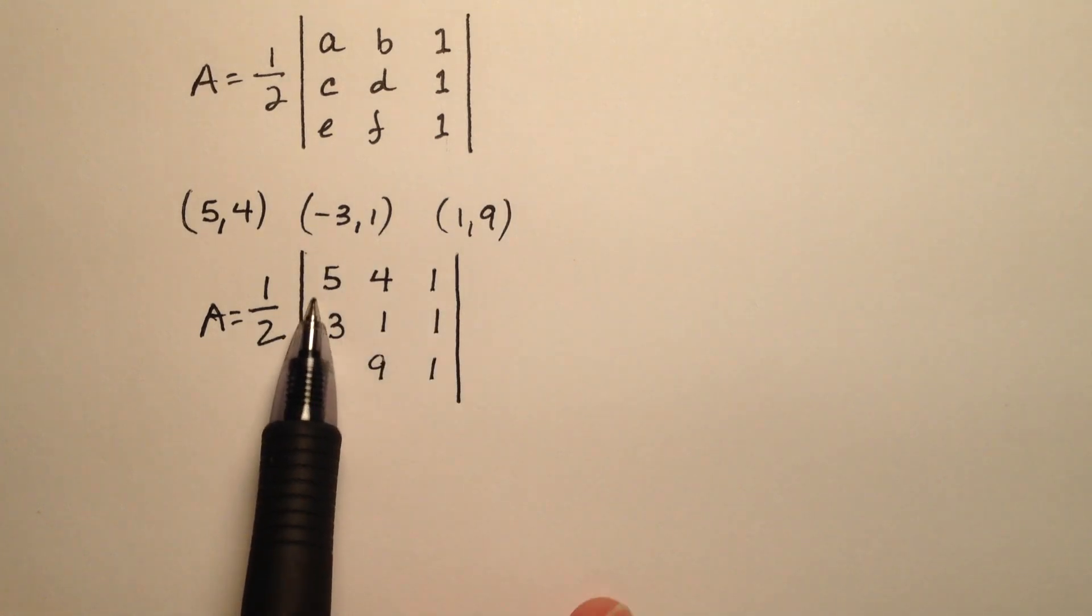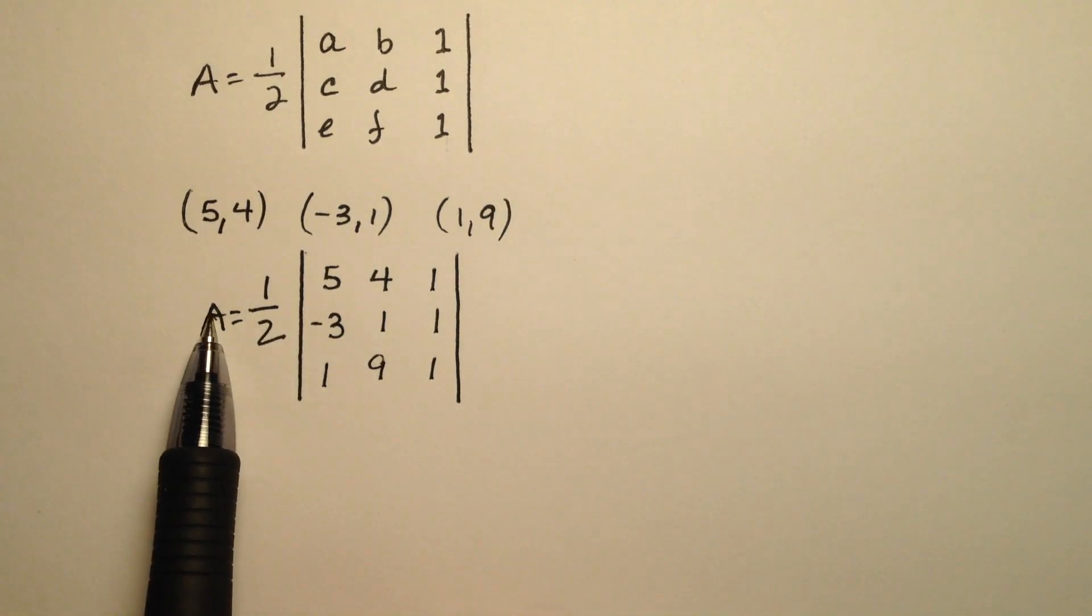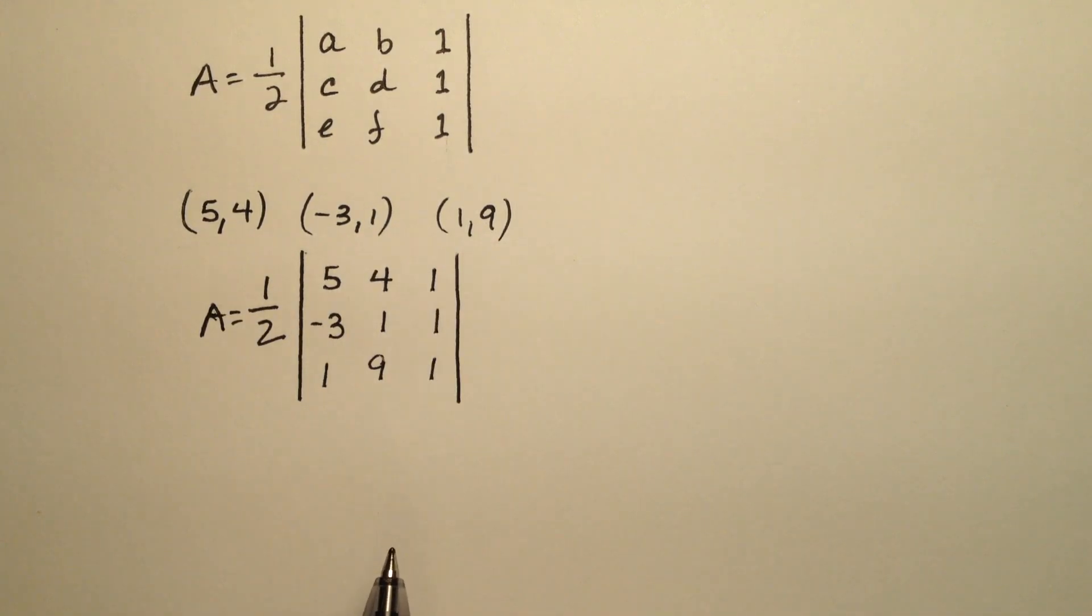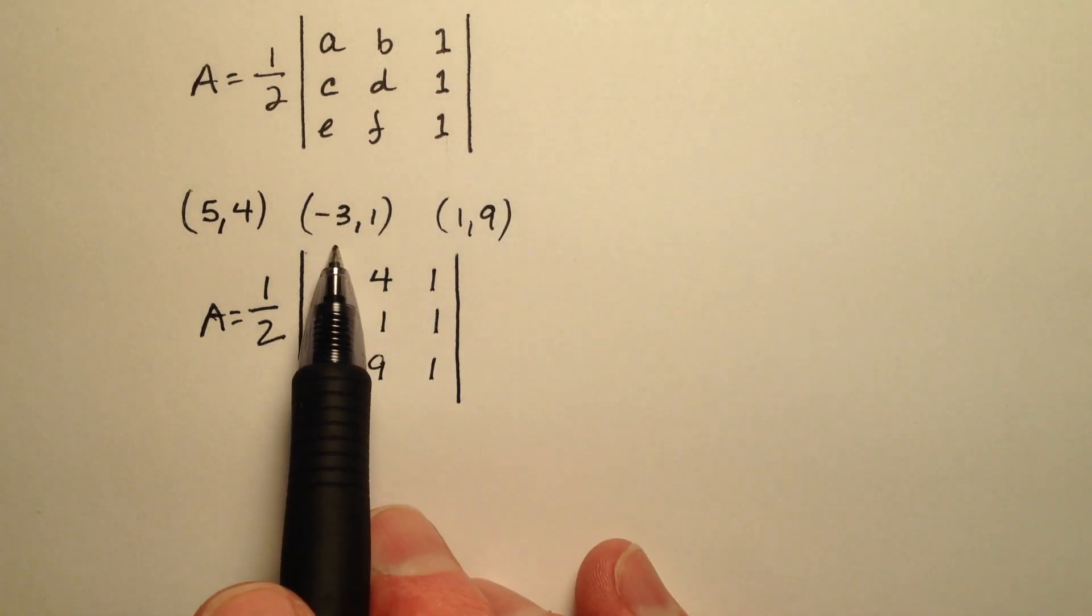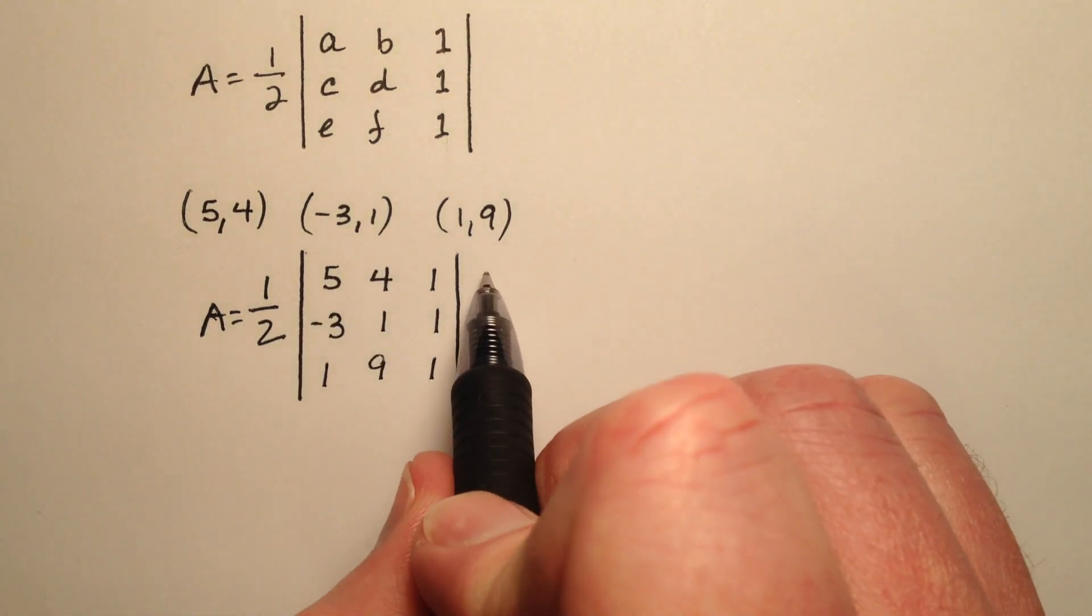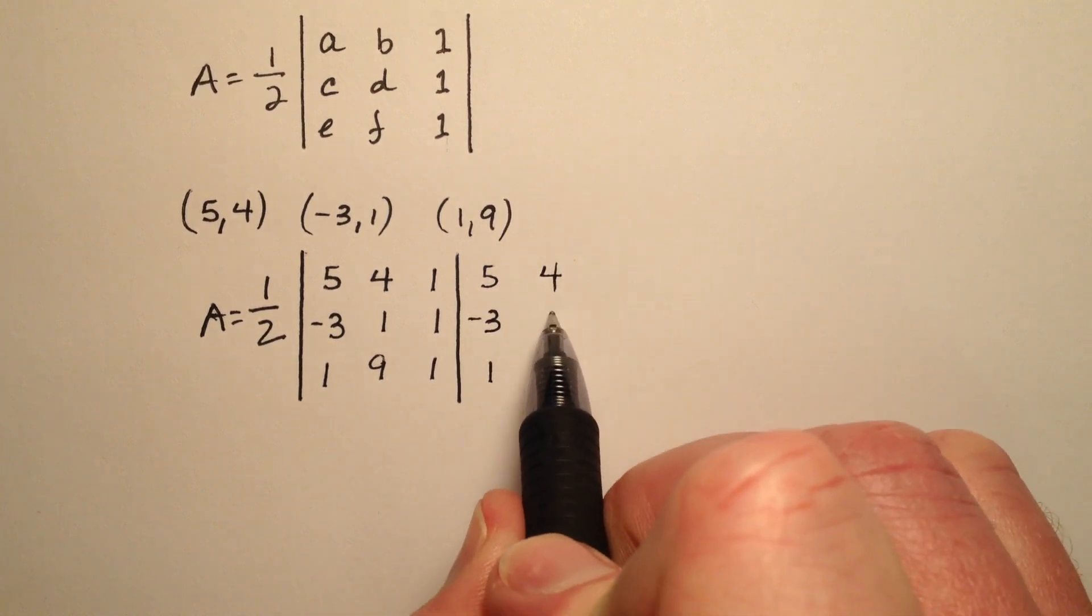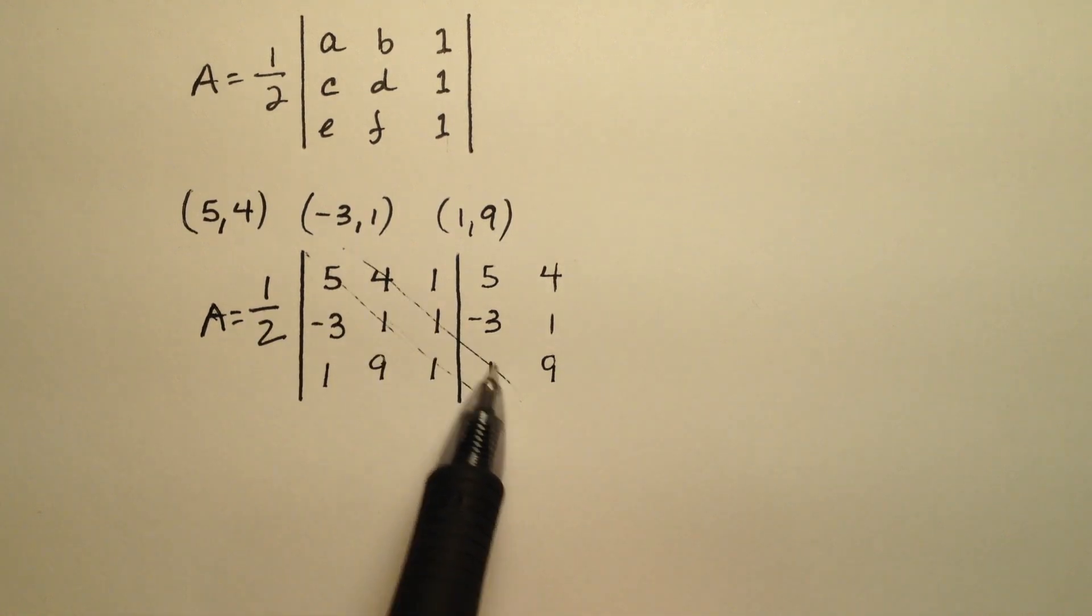So I want to find this determinant. I'll take its absolute value, and then I'll cut it in half. And that's going to be the area of this triangle given these three vertices. So let's go ahead and use diagonals in order to find the determinant of this 3 by 3. So I'm going to rewrite these columns: 5, -3, and 1; and 4, 1, 9. And then I'm going to go ahead and go through and find these diagonals.